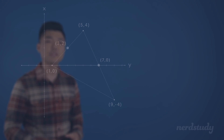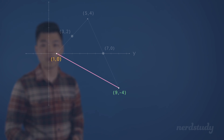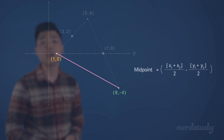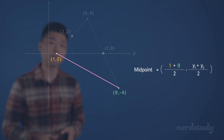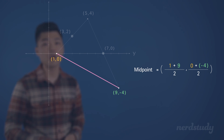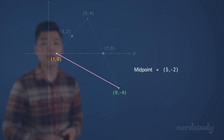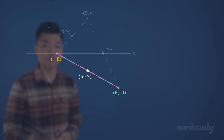Lastly, what's the midpoint for this line segment right here? Well, again, if we plug the coordinates into the midpoint formula, we would get this. What we get is (5, -2) as the midpoint. And again, we will plot that on our graph.